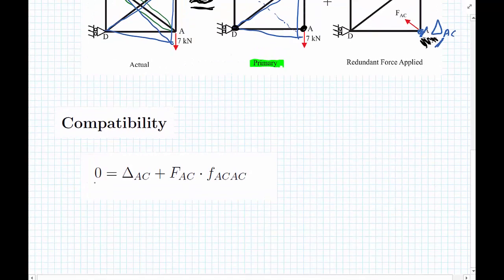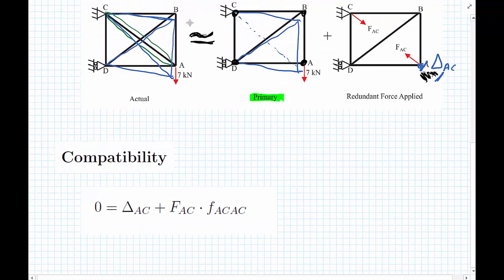On the left hand side we're saying that we want the deflection in AC when we add up the primary and the redundant force structures together to be equal to zero. So that's the zero on the left hand side.